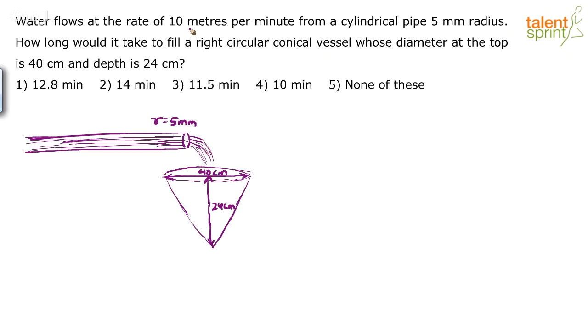So, water is actually flowing into this conical vessel at the rate of 10 meters per minute. Now, in the last model of mensuration, we have discussed that in these kind of cases, the best concept to be used is that the volume remains constant. Just understand that the volume is constant. The volume of water that comes out of the cylindrical pipe should be equal to the volume of this conical vessel.